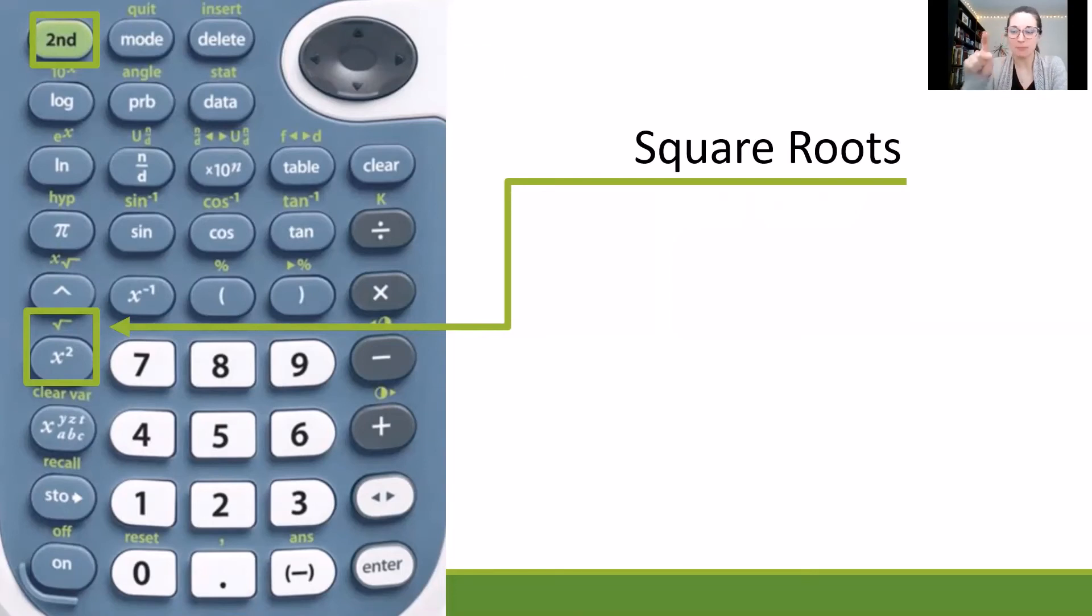So go to the top, click that green second button, and then click the x squared blue button, and that will give you that square root sign. And then you can type whatever number you'd like to get the square root of.